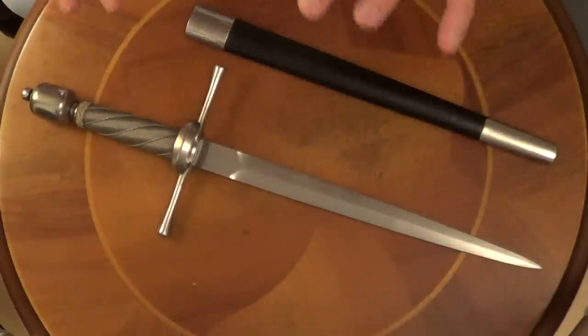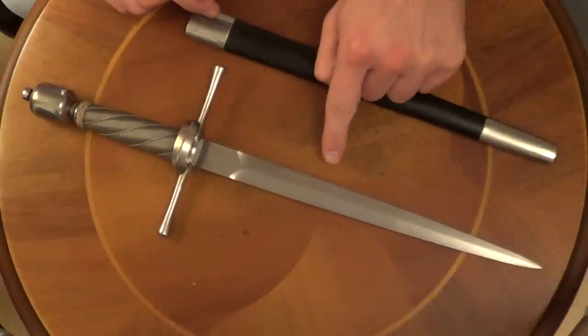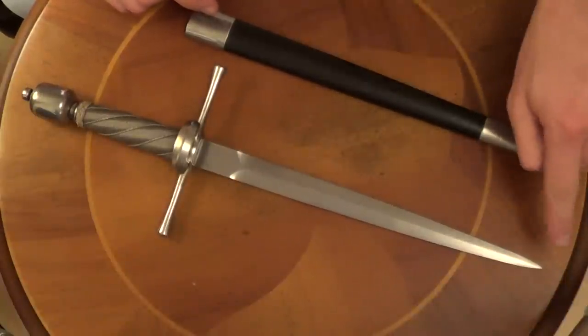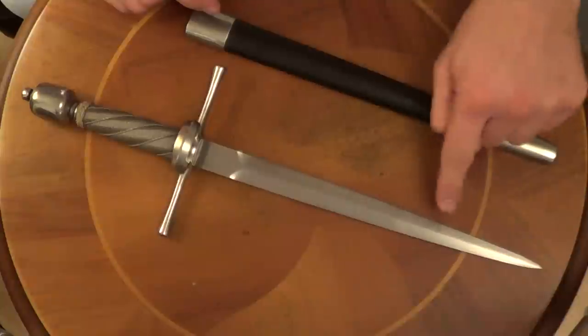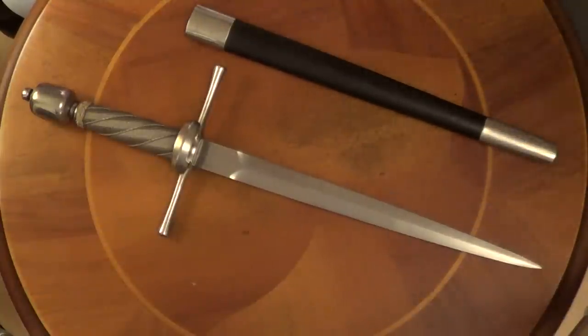But if I was to talk to Hanway and tell them how to make it into a better dagger, I would say put a bigger blade on it and either make it sharp edge and sharp point or blunt edge and blunt point. Don't give it a sharp point and a blunt edge. OK guys, thank you very much. See you soon.